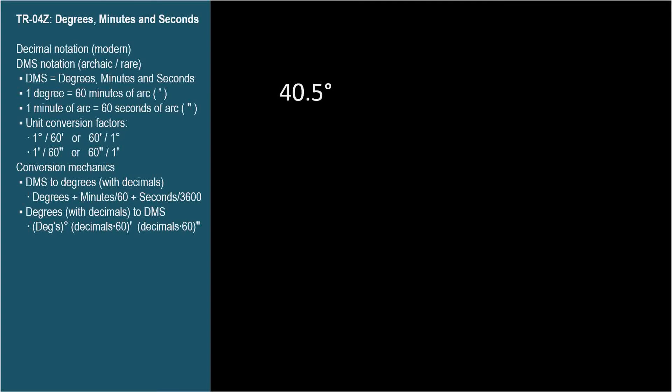When measuring and expressing fractions of degrees, it's most common today to simply use decimals. For example, 40.5 degrees is the angle halfway between 40 and 41 degrees. But there's another way to express fractions of degrees that goes back to ancient times and was fairly common up until the digital age.